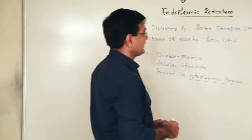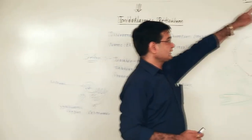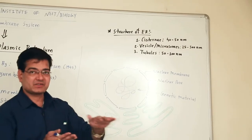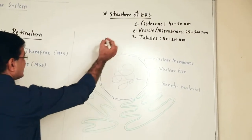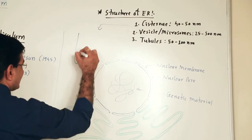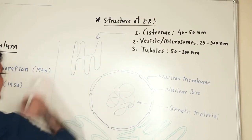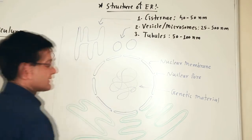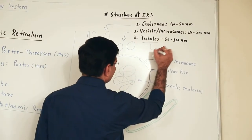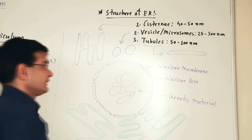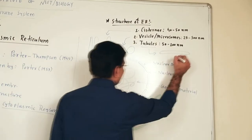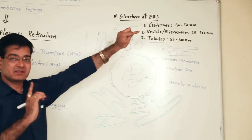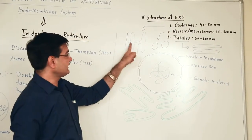The structure of the endoplasmic reticulum has three different types. The first is cisternae, which is a tube-like, flat, and interconnected structure. If we say about cisternae, it is a tube-like structure interconnected with each other. The second type is vesicles, which are round or oblong structures. The third type is tubules, which are flat structures, not interconnected, but may be unbranched or branched.